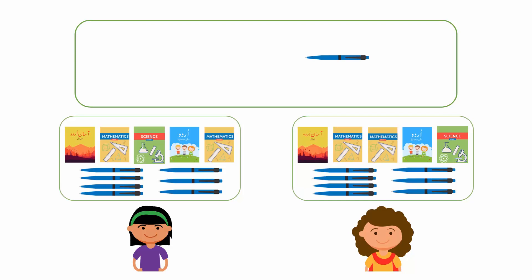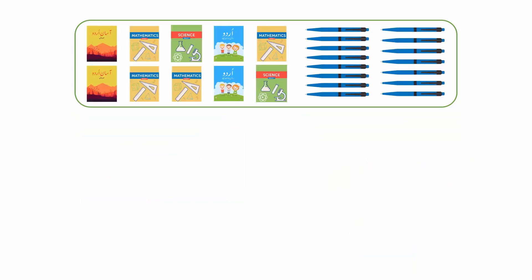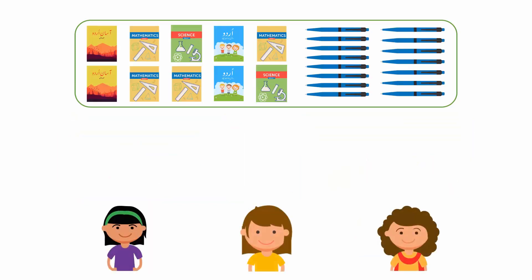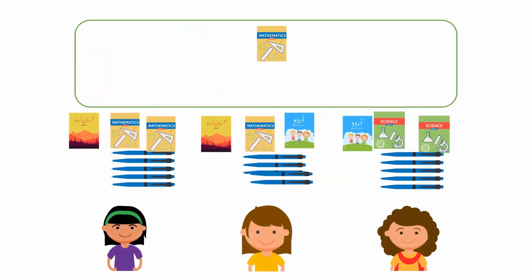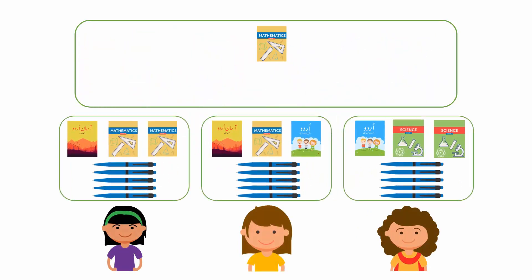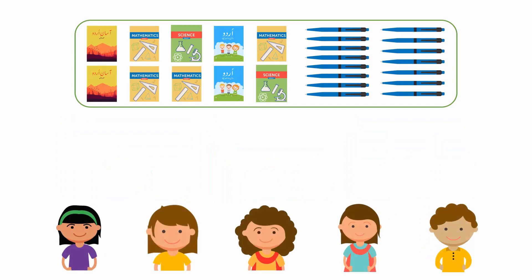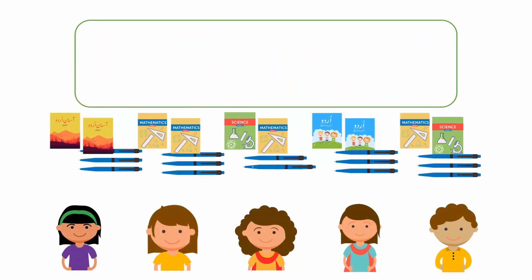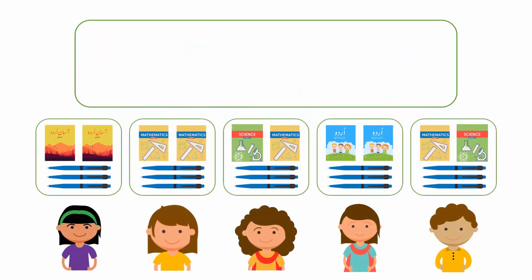If the maximum number of students is three, then we can distribute an equal number of pens, but we can't distribute the books equally. Let the maximum number of students be five — then each student will receive two books and three pens.